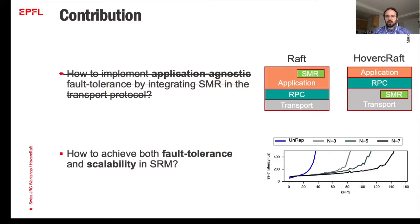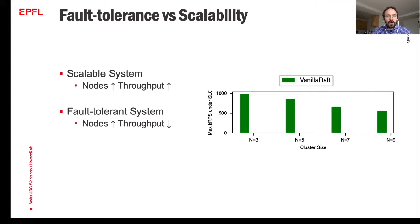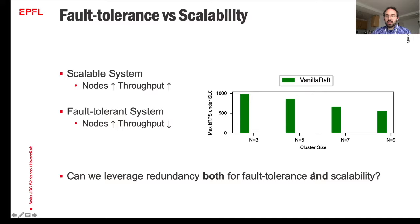Having an application-agnostic solution that allows building generic fault-tolerant RPC services without any code modifications, we focused on the performance characteristics of state machine replication, analyzing it as a workload. The problem is the following: in a scalable system, adding nodes improves achieved throughput. However, in a fault-tolerant system we observe the opposite. We ran Raft — a widely used state machine replication algorithm — with different cluster sizes and observed that as we add nodes, although fault tolerance increases, the achieved throughput under the latency SLO decreases. The question is: how can we leverage redundancy for both fault tolerance and scalability?